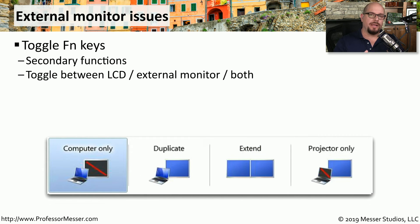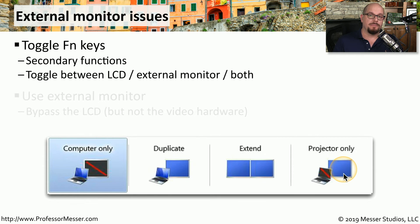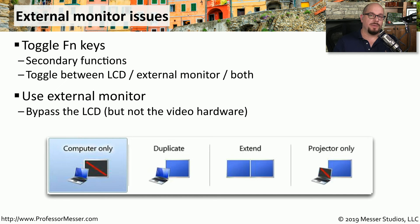If you're used to the internal LCD display, connecting to an external display can sometimes be confusing. There are usually function keys that control how the video signal is sent to the external display, allowing you to cycle through configurations: displaying video only on the laptop, duplicating or mirroring the image on both, extending the display to the external monitor, or showing only on the external display. One common way to force video to the external display is to power off the laptop, connect the external display, then power on — many laptops automatically use the external display if detected during boot.